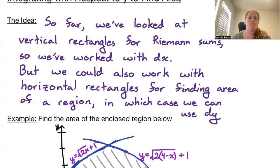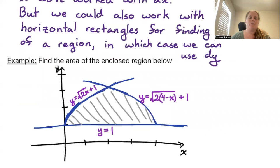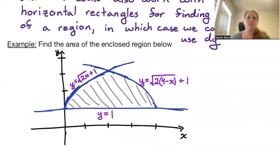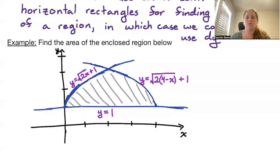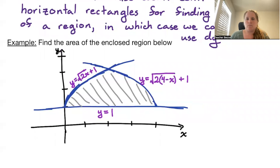So for example, let's say we want to find the area of the region enclosed between the line y equals 1, the equation y equals the square root of 2x plus 1, and the equation y equals the square root of 8 minus 2x, plus 1.